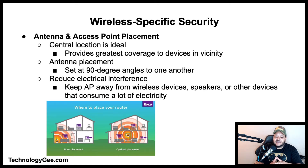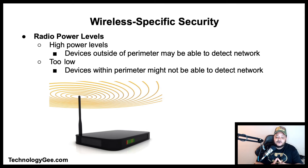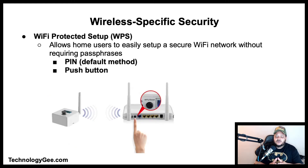To help reduce electrical interference, be sure the access point is away from other wireless devices, speakers, or any device that consumes a lot of electricity. Wireless routers and access points have adjustable radio power levels. If set too high, devices outside the perimeter of the business or home may pick up the network and attempt to gain access. If set too low, devices within the perimeter that should have access may not be able to locate the network.